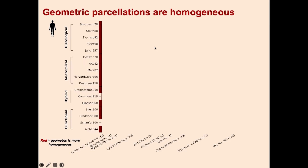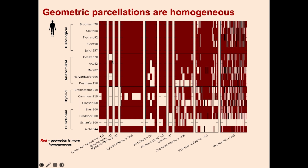We compare the homogeneity of geometric parcellations with existing ones. In this plot, the y-axis is the parcellation and the x-axis is the different maps being compared. Red means the geometric parcellation produces more homogeneous regions than existing ones. Using only T1-weighted geometry, it does well — and looking across the different maps, it doesn't win all the time, but it is using one single feature to capture all these biological properties at once.